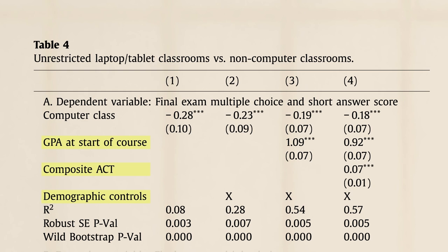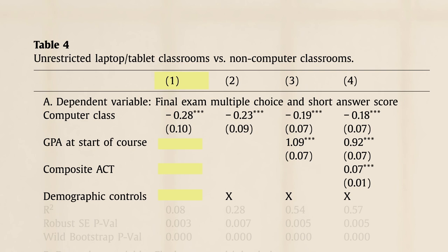Models are distinguished by the control variables, or covariates, they include, besides treatment status. Estimates with no covariates are simple comparisons of treatment and control groups. I thought they just forgot to fill it out. Column one suggests electronics use reduced final exam scores by .28 standard deviations.